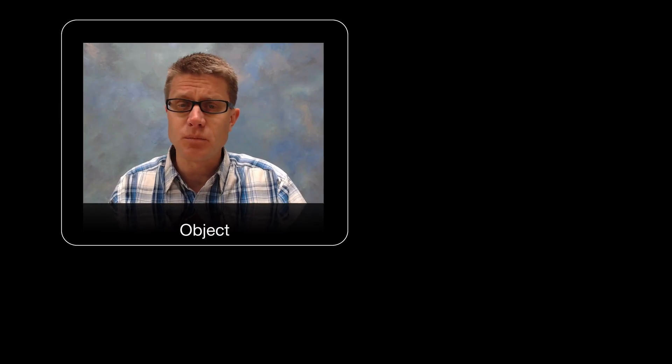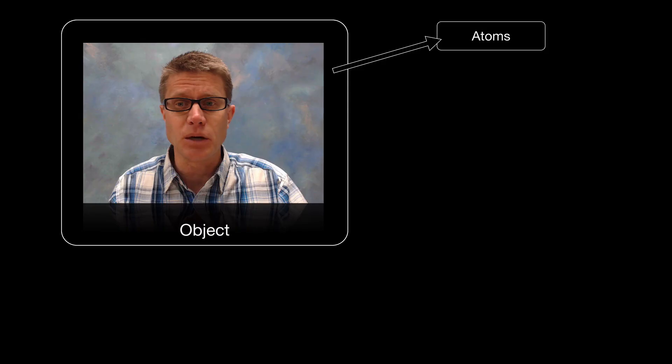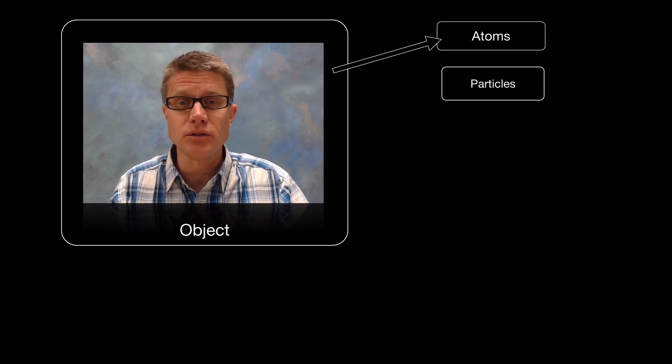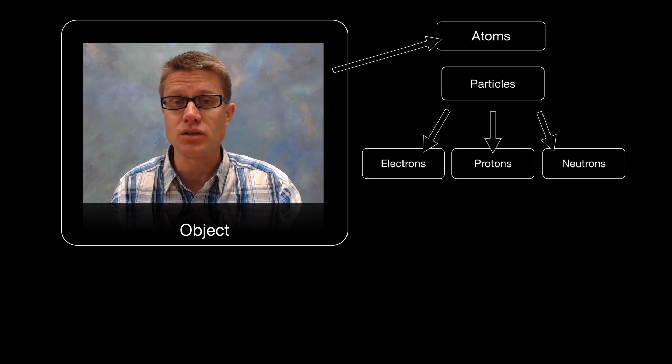Now you might think as we look smaller and smaller in the world of physics, as we get down to the level of atoms, then everything must be an object. But what scientists have discovered is if you break down atoms we get particles inside those small particles. Those are electrons, protons and neutrons.